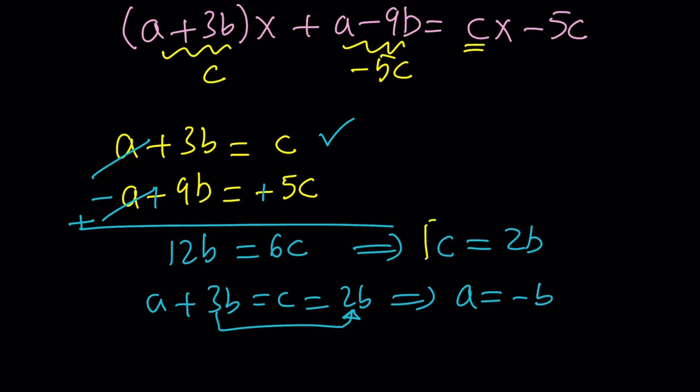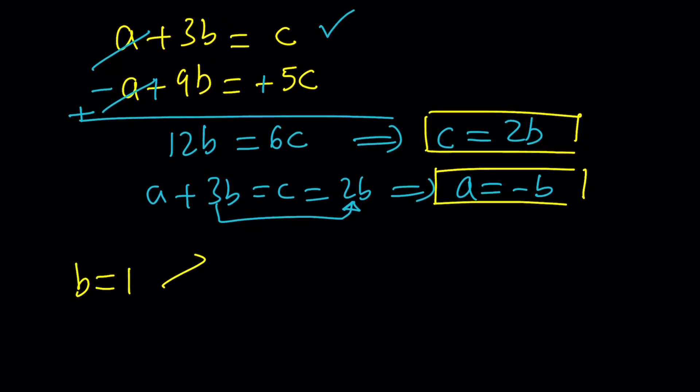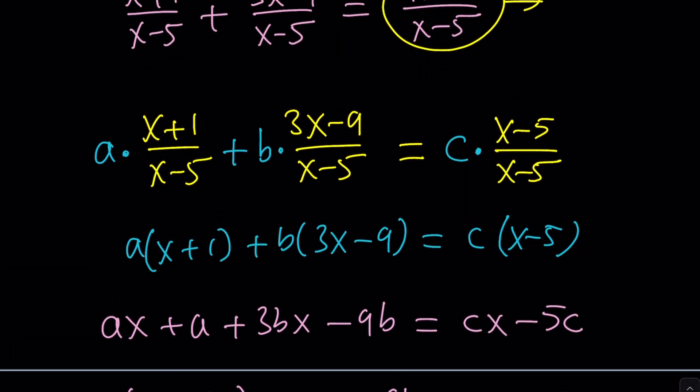So, we got a parametric solution because there are three variables. This shows that there are infinitely many solutions, but we don't care. All we need is a single solution and, obviously, I want to go with the simplest case. What's the simplest case? Taking b equals 1. Obviously. If b is 1, c is 2, and a is -1, let's go ahead and plug those into this equation.